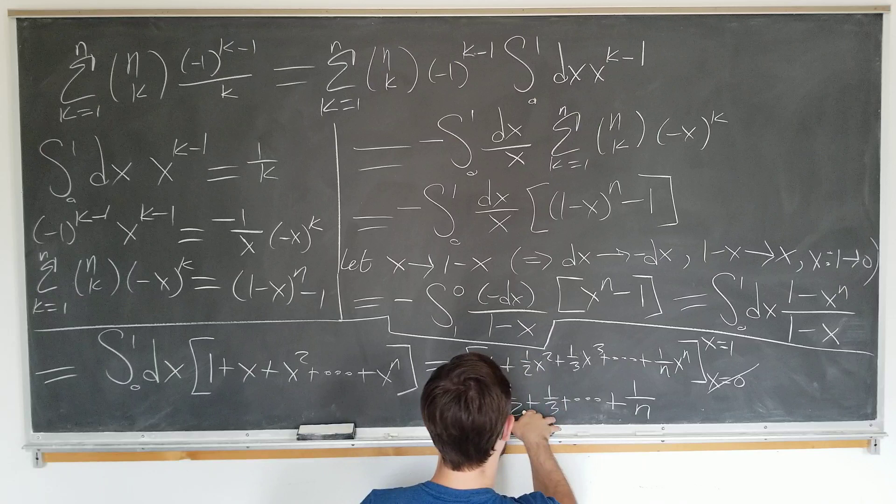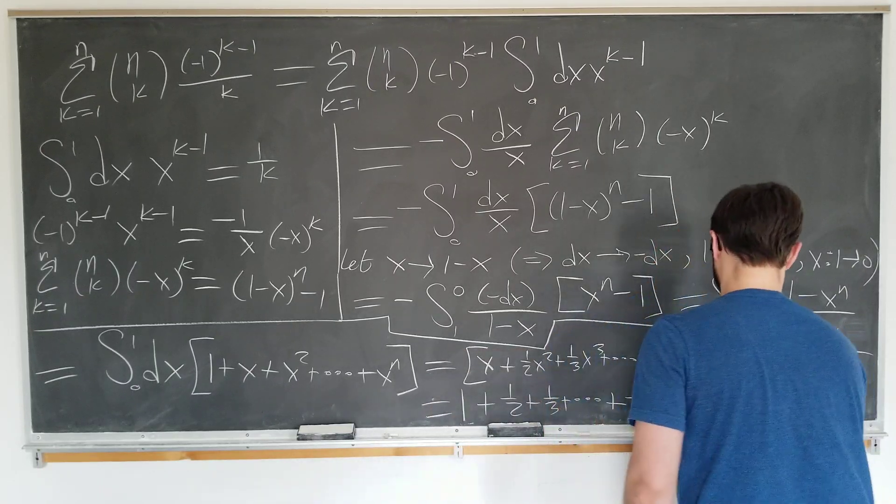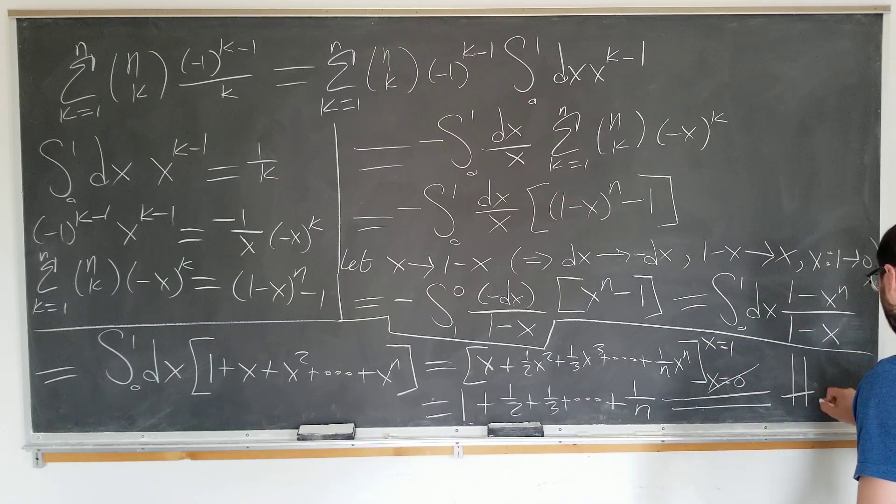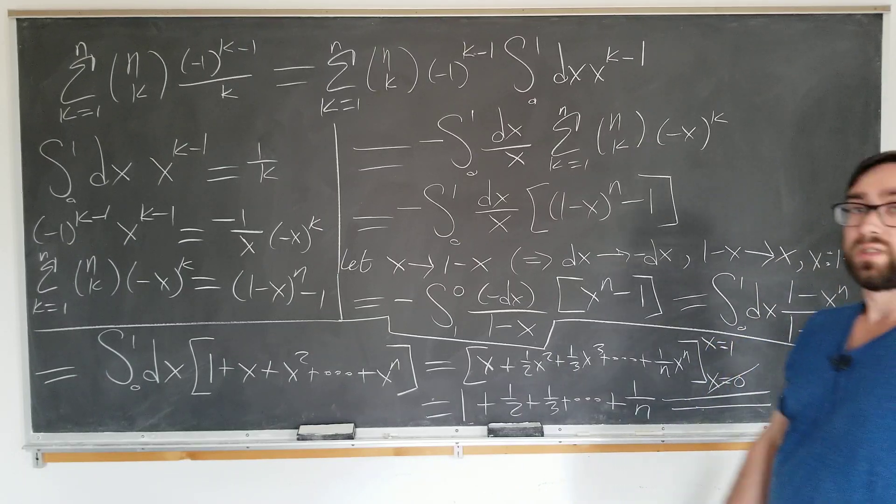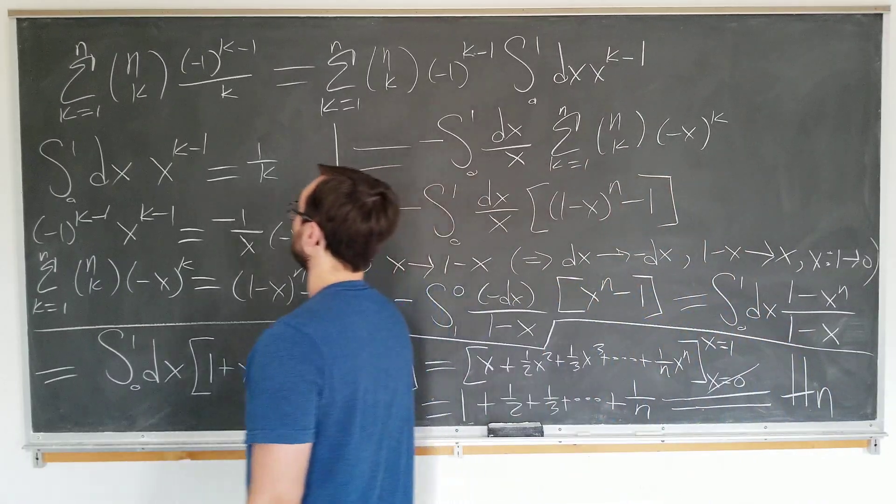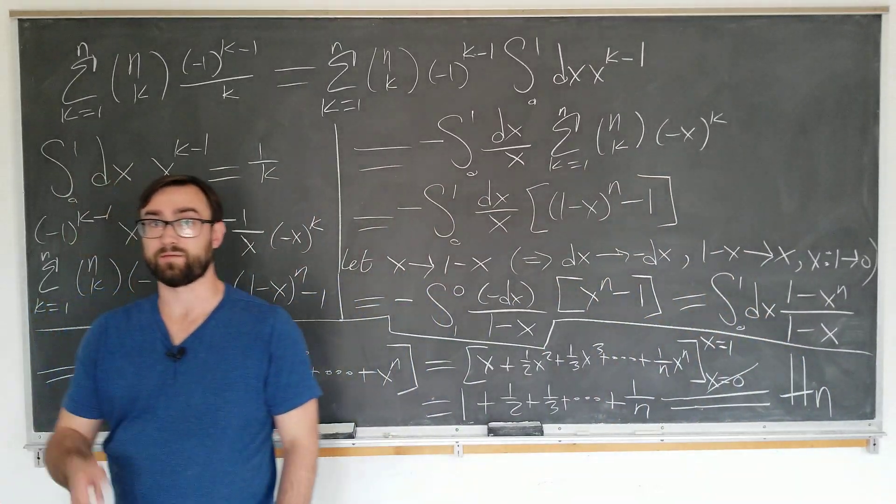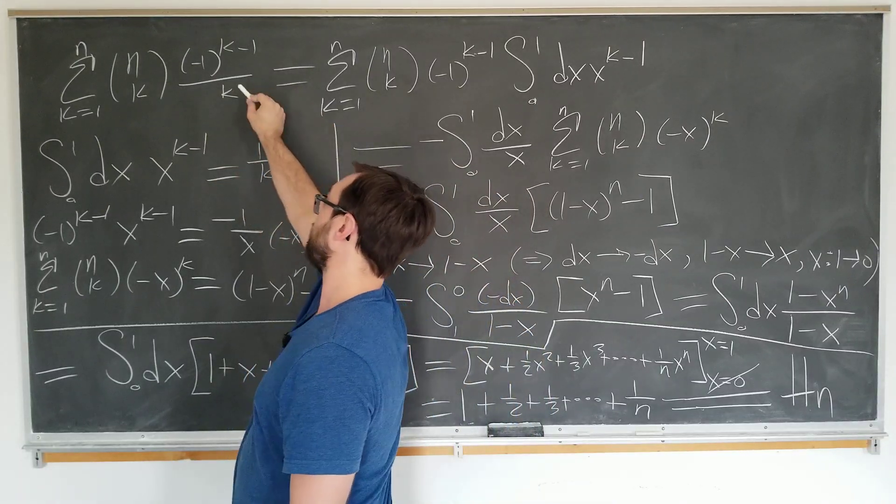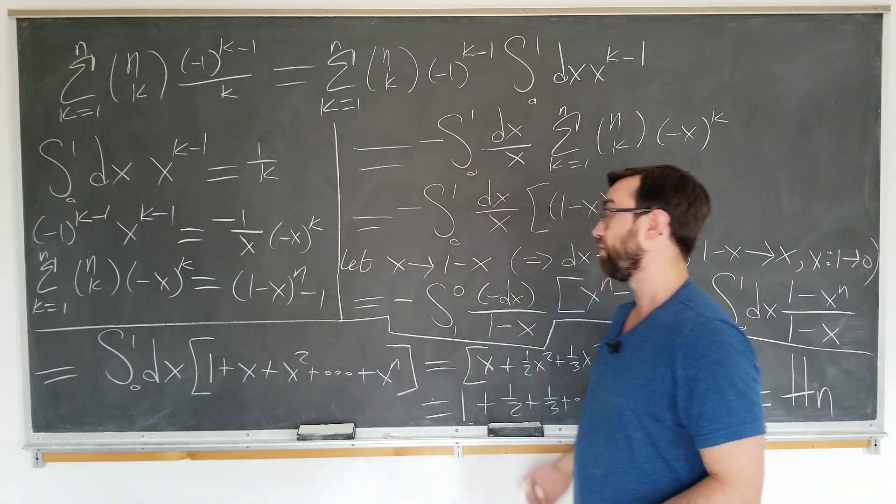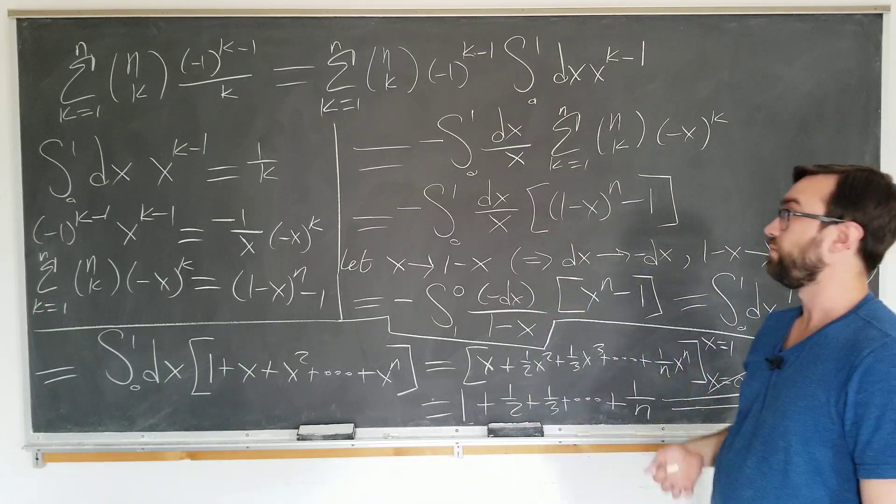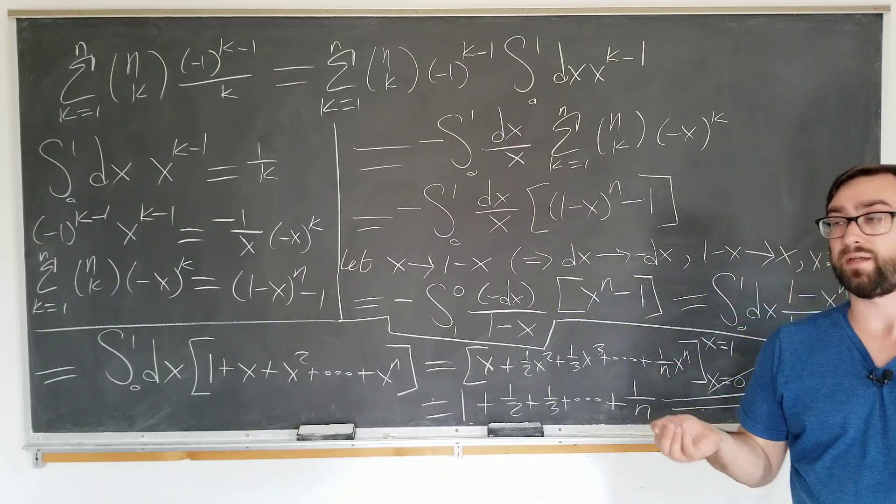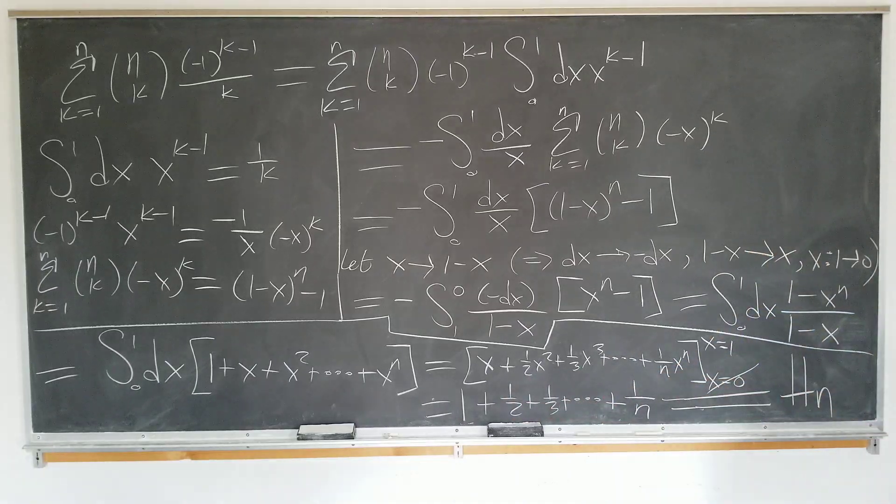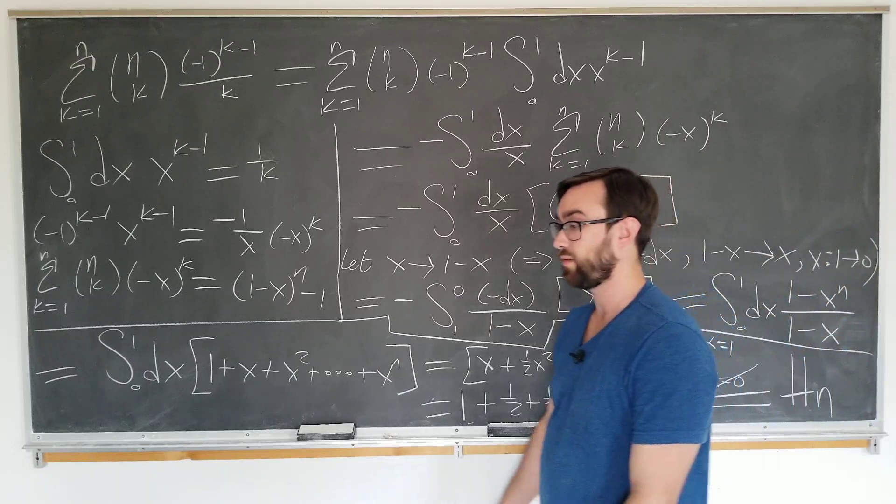Which many viewers could recognize as the nth harmonic number H_n. So this is actually a pretty surprising result. We have the alternating series of binomial coefficients with a weight of one over k, inverse weight, actually removes all of the alternating behavior resulting in a sum of the reciprocals of the integers themselves. And that's pretty much the main result of the video today.